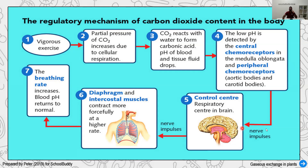The medulla oblongata sends impulses to the respiratory control center in the brain, which interprets the condition and sends nerve impulses back to the respiratory tract, triggering forceful inhalation. You begin breathing heavily during exercise. This increased breathing brings in more oxygen, which neutralizes the acids, increases breathing rate, and returns the blood pH to normal, removing the acid and maintaining blood pH balance.